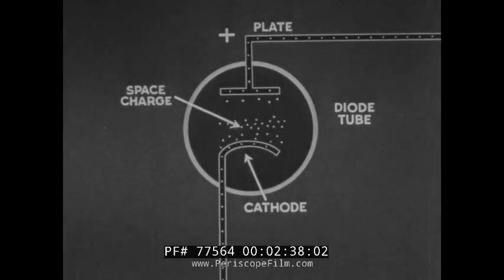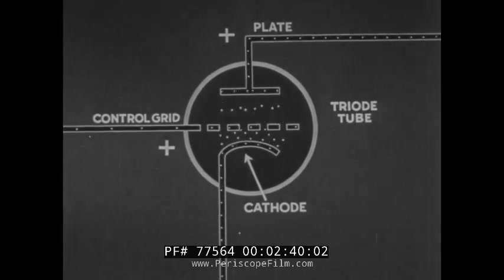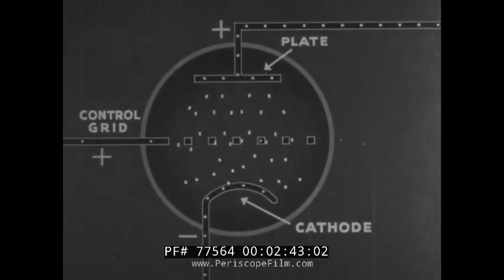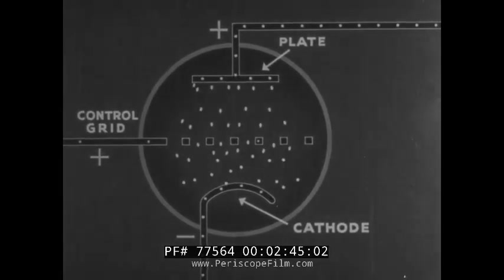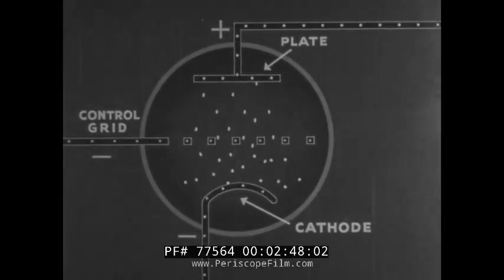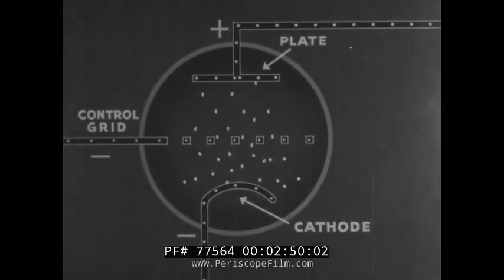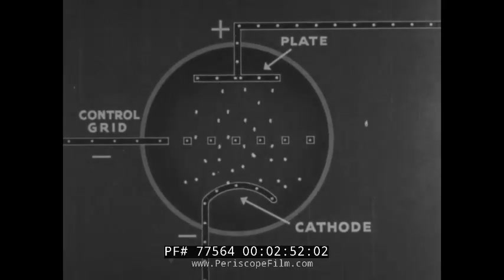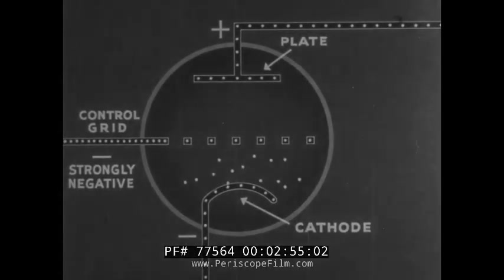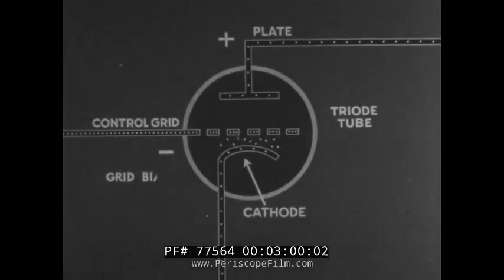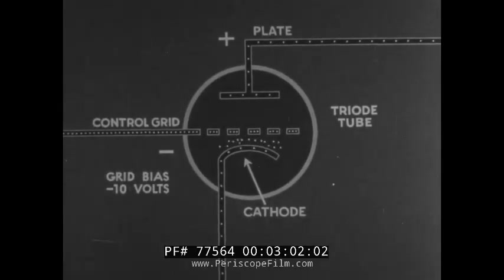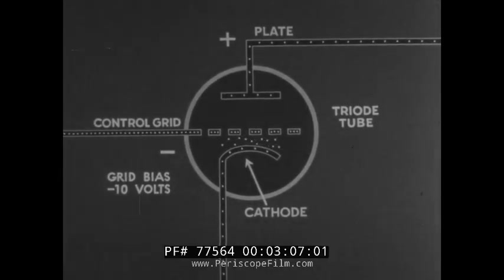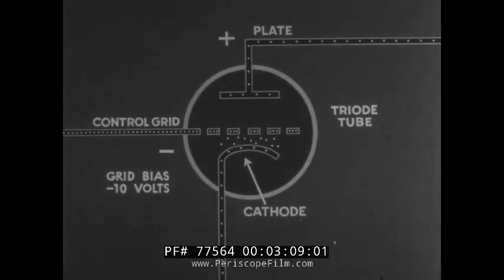In the diode tube, many electrons leaving the cathode move about between cathode and plate, constituting space charge. The triode tube differs from the diode in containing an element known as the control grid, located between cathode and plate. With the grid positive, many electrons pass from cathode to plate. If the grid is given a negative charge, it repels the negative electrons and fewer reach the plate. The grid bias may be so strongly negative as to entirely stop current flow — this is known as the cutoff bias.